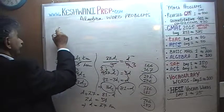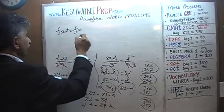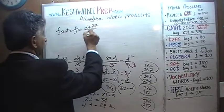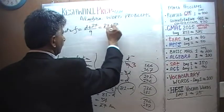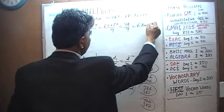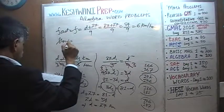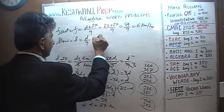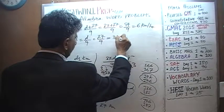Now that we have D = 27, we can find the speeds. The fast guy's speed is (D + 27) over 9 = (27 + 27) over 9 = 54 over 9 = 6 kilometers per hour. The slow guy's speed is D over 9 = 27 over 9 = 3 kilometers per hour.